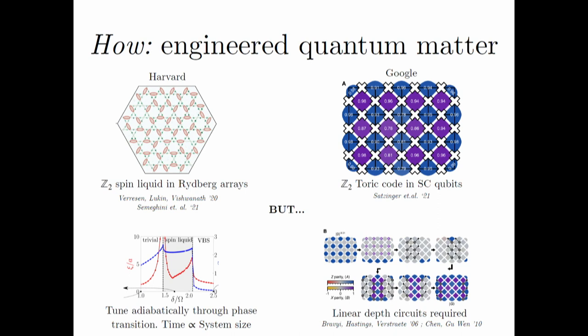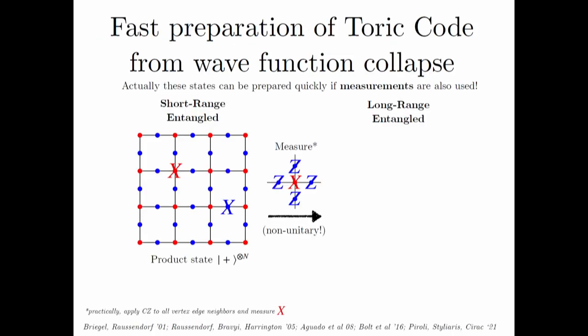However, there's a restriction. Starting from a trivial state and evolving adiabatically into another phase takes a time that scales with system size. On a quantum circuit, Lieb-Robinson bounds argue that a linear-depth circuit is required — so for a larger chip, the circuit depth scales with system size. But this is only if you use unitaries. There is a cheat — using measurements. This was known 20 years ago: you can prepare the toric code quickly if you use measurements.